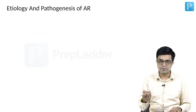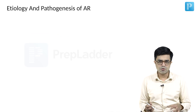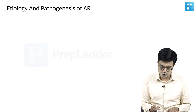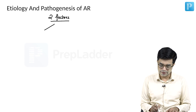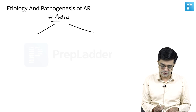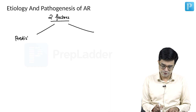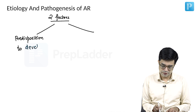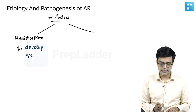Etiology and pathogenesis is complicated, but to keep it simple, there are two factors which both of them need to be there. The first factor which needs to be there is there should be a predisposition of the individual to develop allergic rhinitis.